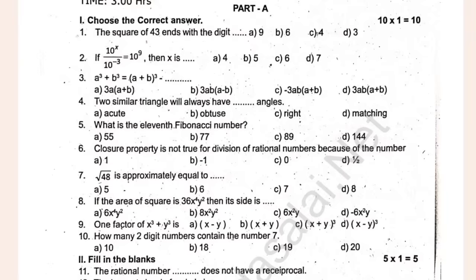The square of 43 ends with a digit. A cube plus 3. B cube is equal to A plus B cube. Two similar triangles will always have equal angles. What is the 11th Fibonacci number?